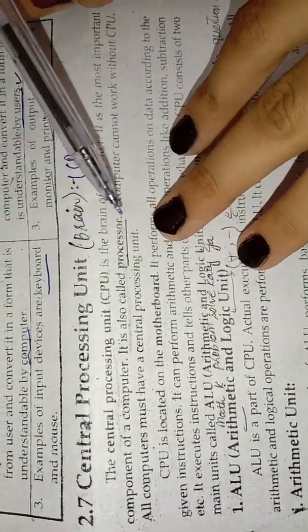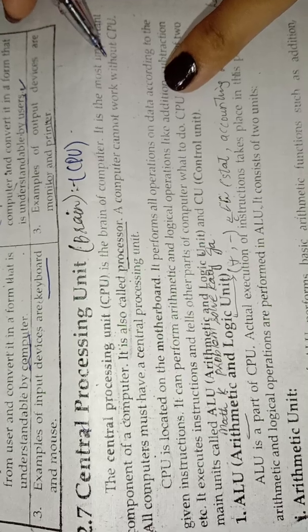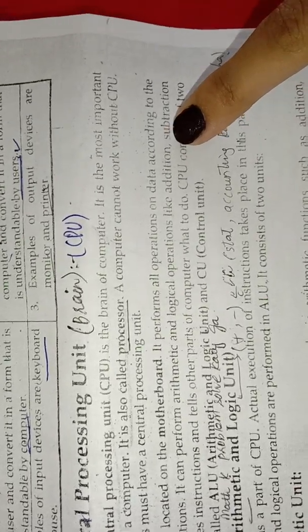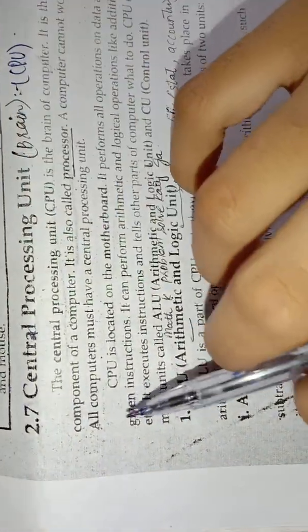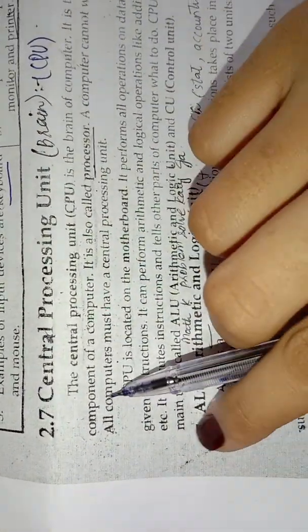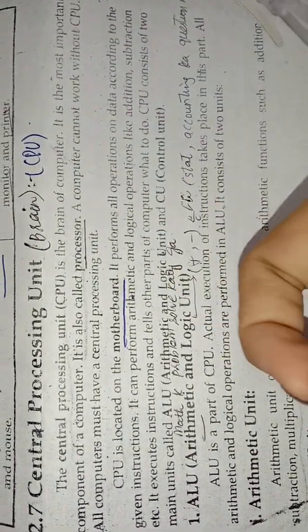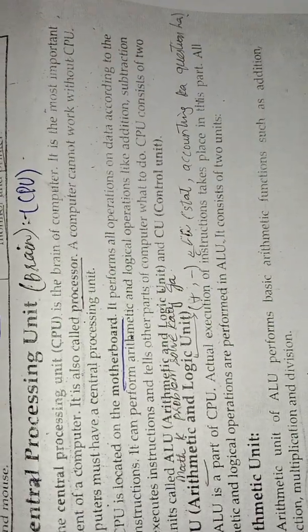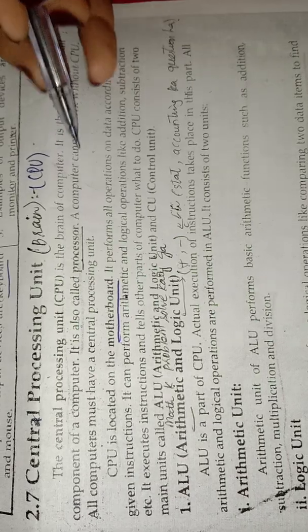The CPU is also called a processor. All computers must have a central processing unit — it is required. The CPU is located on the motherboard. It performs all operations on the data according to the given instructions.